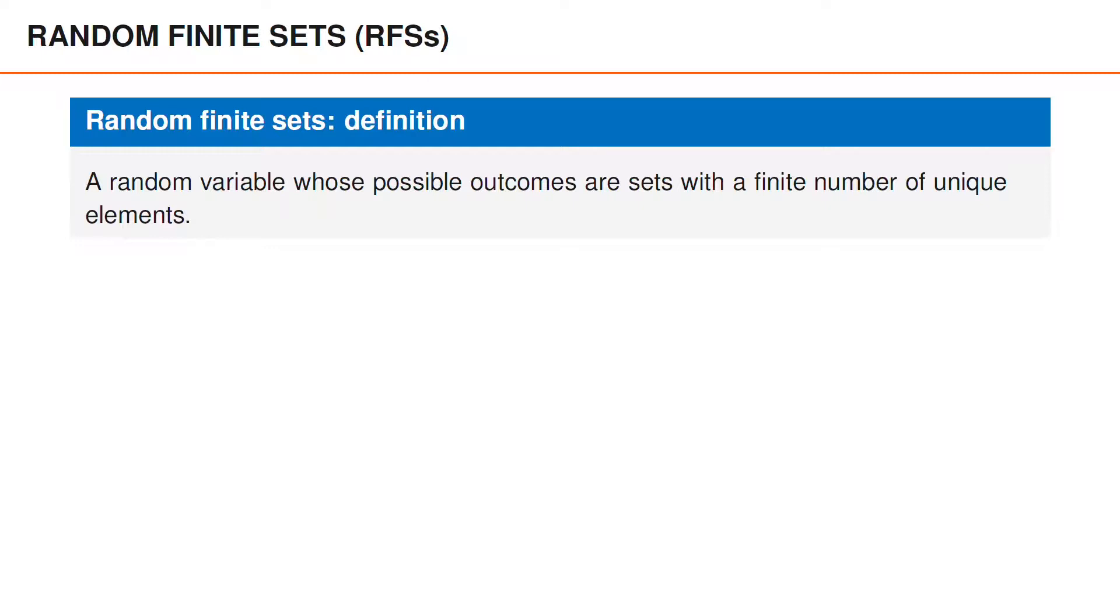That is, if you generate samples from a random finite set, you obtain sets and these sets always have a finite number of elements, and the elements are also unique. We note that both the number of elements in the random finite set, or RFS for short, and the elements themselves are usually random.